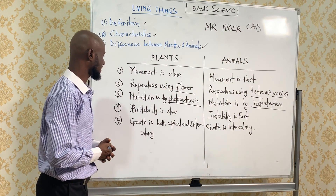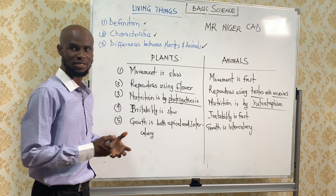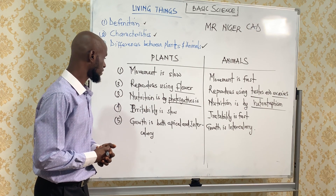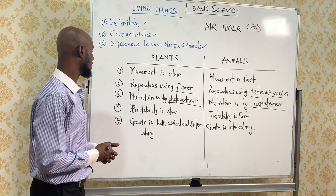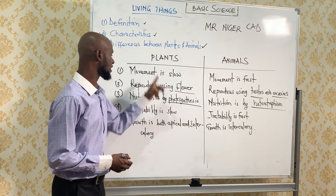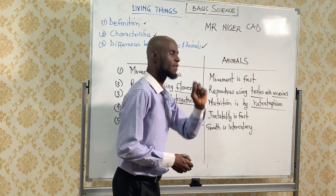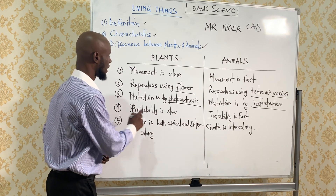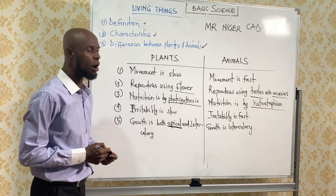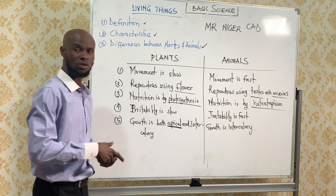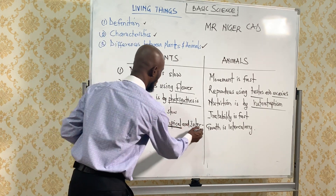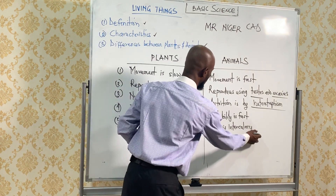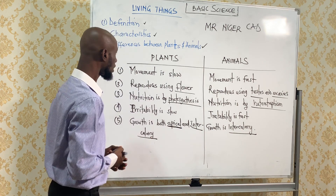The fourth feature is irritability — how they are sensitive. Plants are sensitive and animals are also sensitive, but the irritability in plants is slow while in animals it is fast. Growth in plants occurs both at the tip, called apical growth, and also within the plant, called intercalary growth. While in animals, growth is always within — that is, intercalary.